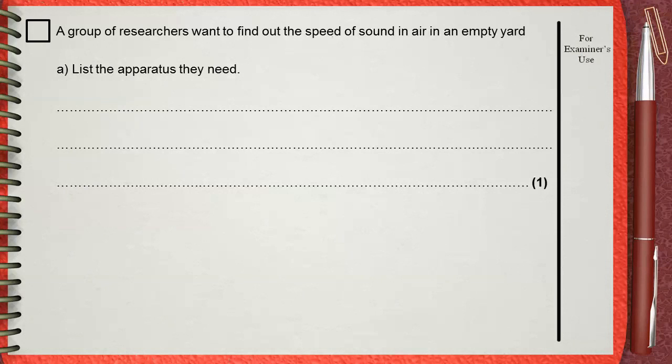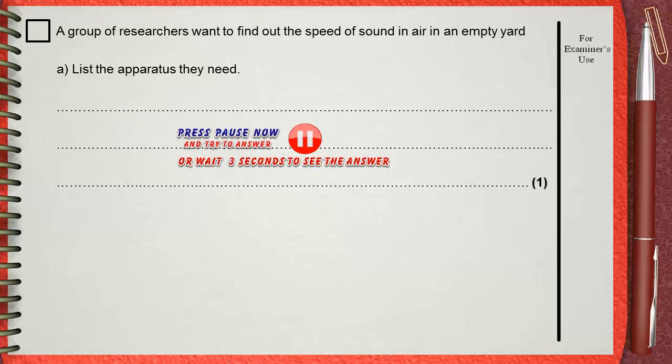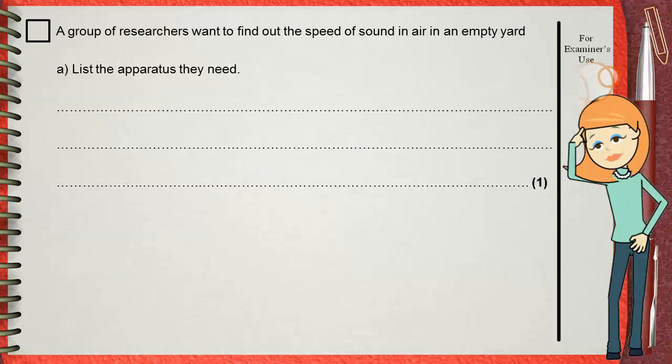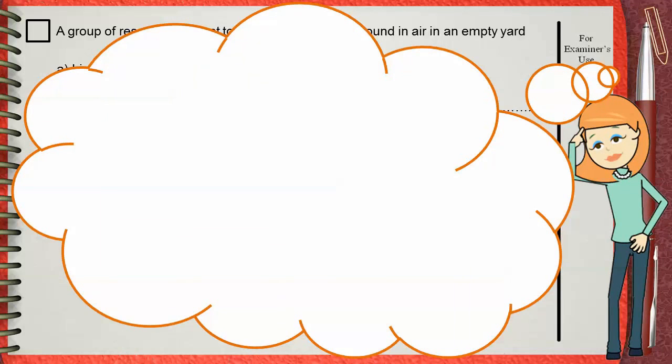A group of researchers want to find out the speed of sound in air in an empty yard. Let's remember first an experiment to find out the speed of sound using the direct method.